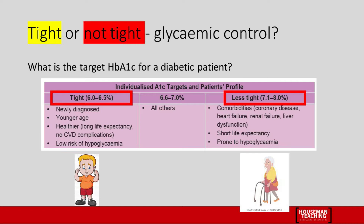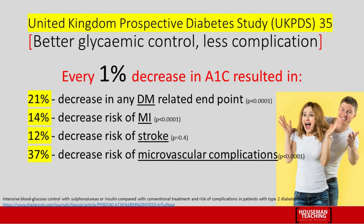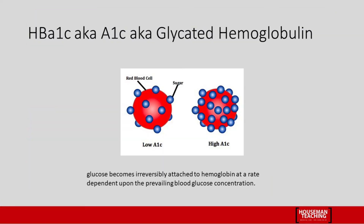Please pause this video if you haven't memorized these figures. Measurement of HbA1c is important — the UKPDS study shows that every one percent improvement in HbA1c results in a significant improvement in any diabetes mellitus related complication.